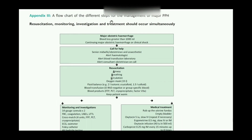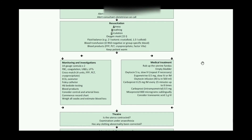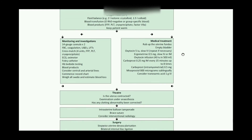In summary: whenever there is major hemorrhage with blood loss greater than 1000 ml, we call for help, alert the essential team — obstetrician, midwife, anesthetist, hematologist — then address airway, breathing, and circulation, manage fluid balance and blood products, arrange continued monitoring, and send all relevant investigations included in this chart. Then we proceed to medical management with essential drugs.